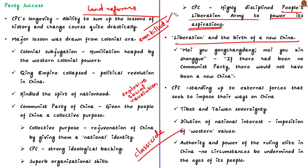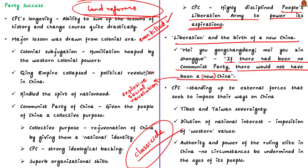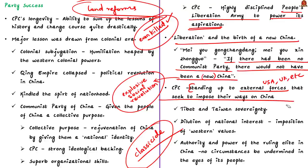This was seen as liberation and the birth of new China, giving way to the famous slogan: 'If there had been no Communist Party, there would not have been a new China.' The party also stresses the importance of standing up to external forces which seek to impose their ways on China. CPC still uses this attitude whenever issues of Tibet and Taiwan sovereignty are raised, or whenever human rights violations in China are criticized internationally — considering these as attacks on China's sovereignty.